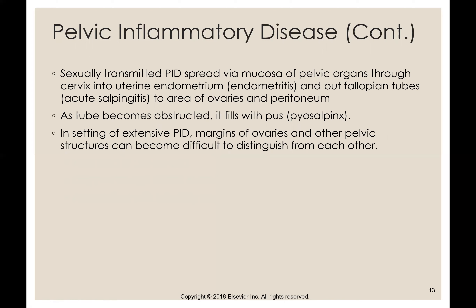Sexually transmitted PID spreads through the mucosa of the pelvic organs — starting at the cervix into the endometrium, causing endometritis (stage one), then out of the fallopian tubes causing acute salpinitis (stage two), then to the area of the ovaries and the peritoneum. As the tube becomes obstructed, it fills with pus, which is pyosalpinx. In the setting of extensive PID, the margins of the ovary and other pelvic structures can be difficult to distinguish — it honestly just looks like a large mass in the adnexa. By stage three or four, it's really hard to identify what is what, because the infection causes an abscess that sticks to the ovary and just looks like a very large mass.